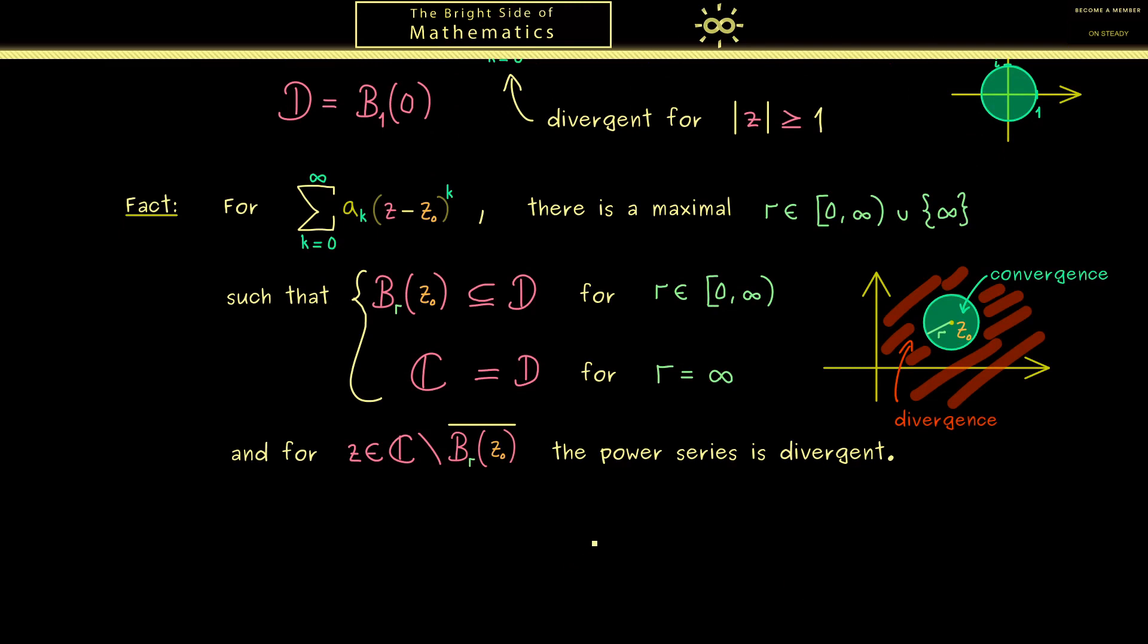Now for the end here I can tell you often it's sufficient to know that there exists such an r but sometimes it would be nice to have an explicit formula for it. Then we would be able to calculate this value of r.